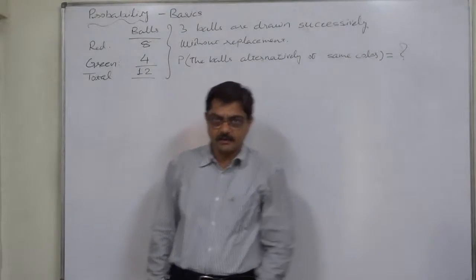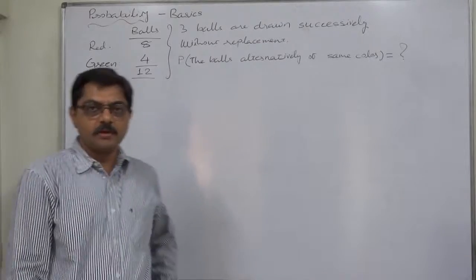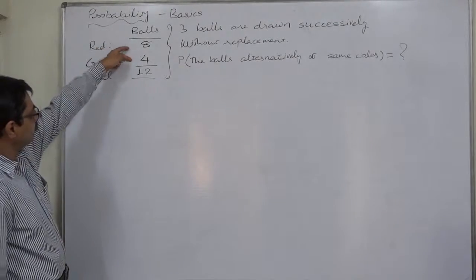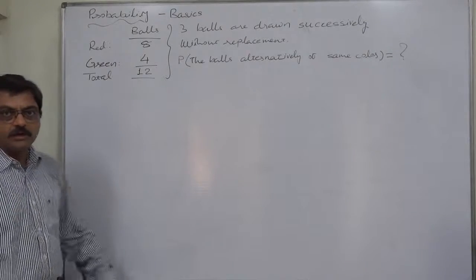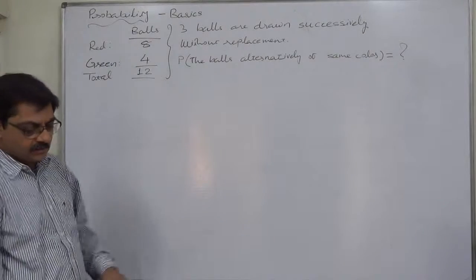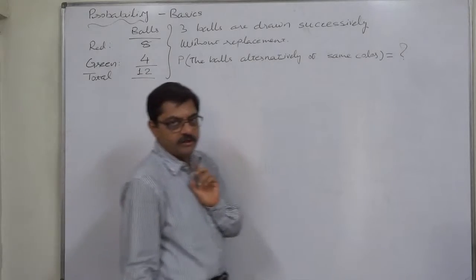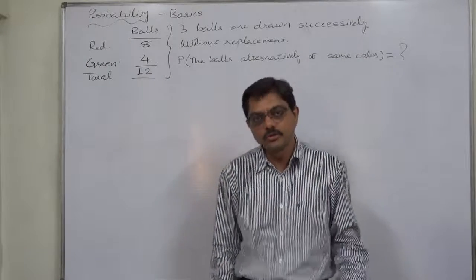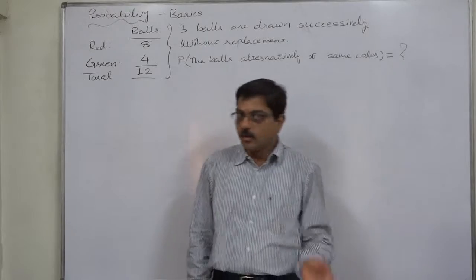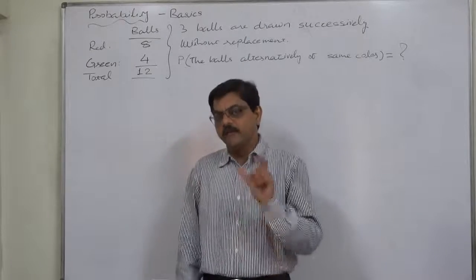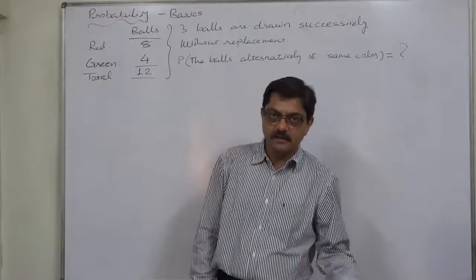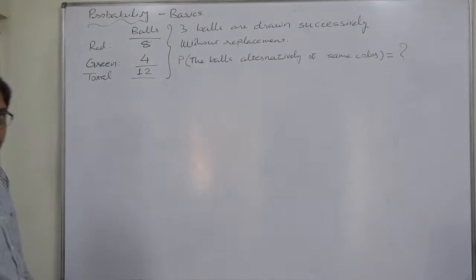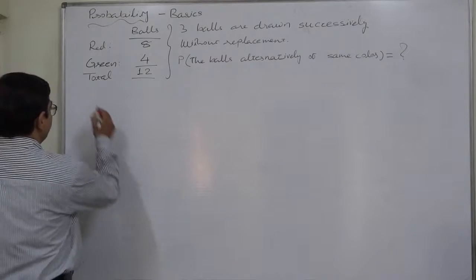Now, what do we mean by 'alternatively of same color'? There are two types of balls: red and green. Alternatively of same color means if the first ball drawn is red, the second should be green, and the third should again be red. Or another way: first green, second red, third green.